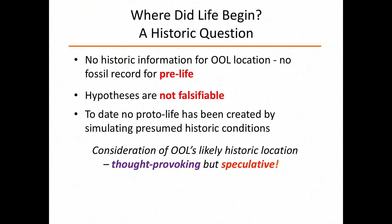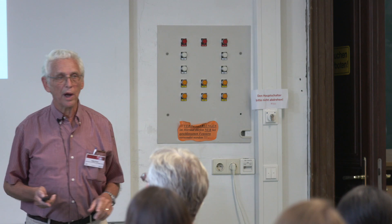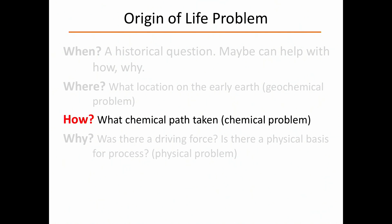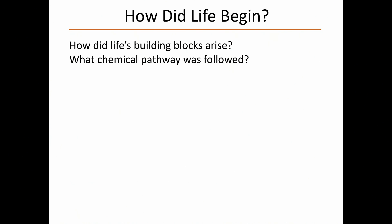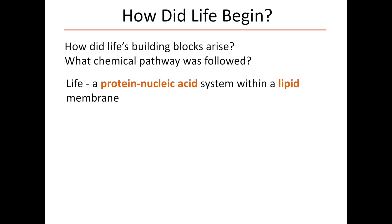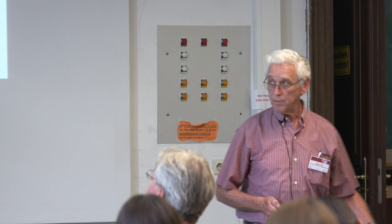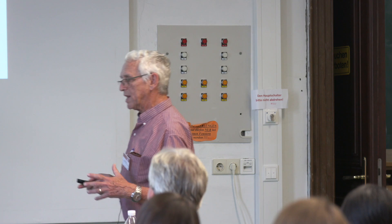Now the 'how' question — which I think is the interesting one, coupled with the 'why' question. What chemical path was taken? Where did life's building blocks come from? Because those molecules aren't just lying around — they have to be made somehow. Life, very simplistically, can be thought of as a protein nucleic acid system within a lipid membrane. Proteins are made of amino acids, nucleic acids of nucleotides joined up, and lipid membranes are made of lipids. So how could amino acids, nucleotides, and lipids have formed naturally?